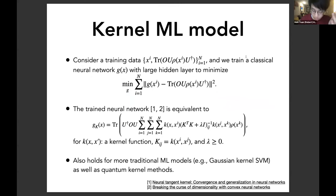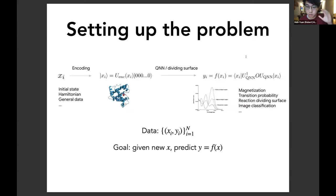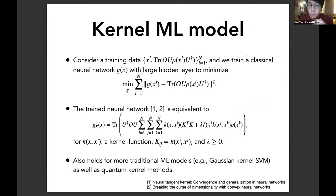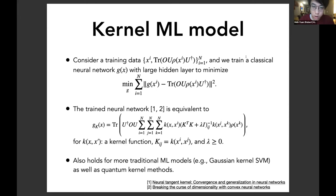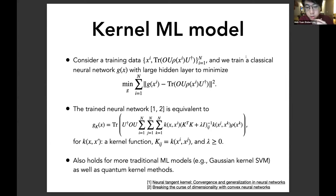More precisely, we consider the following setup: we have an initial vector x_i, encode it using some encoding circuit into quantum state space, and the output y_i is a function of x_i defined as follows: we evolve the encoded quantum state by some quantum circuit U_QNN, and measure the expectation value of some observable as the output. The data will be x_i mapping to y_i and the goal, given a new input x, is to predict y = f(x). This is essentially simulating a quantum circuit and is a very general model because all quantum computation can be cast into this form.